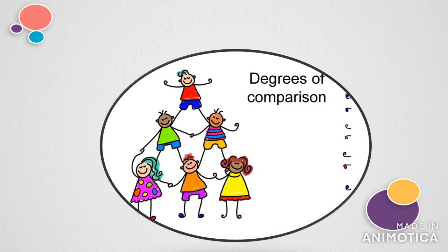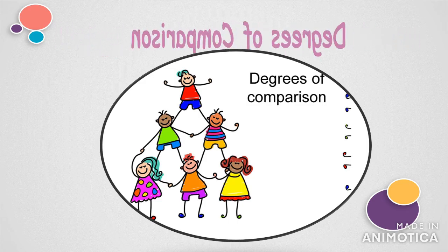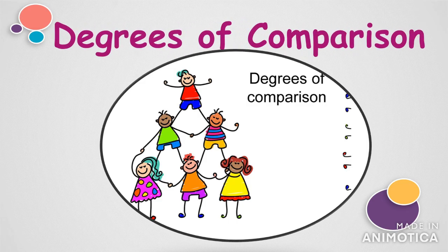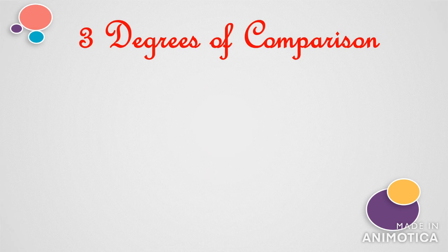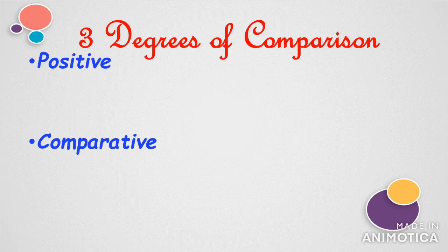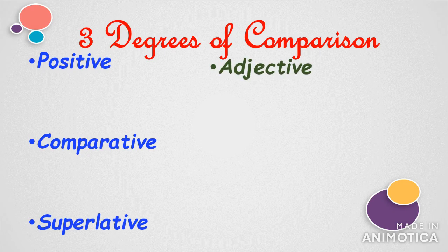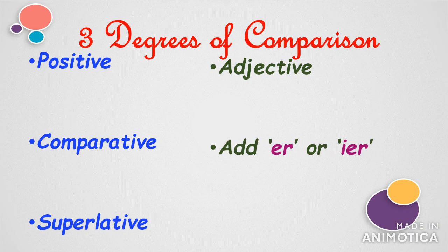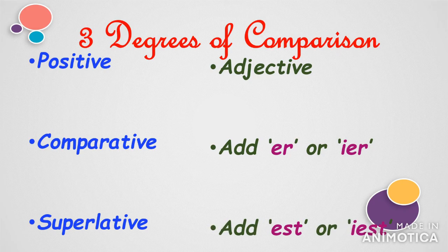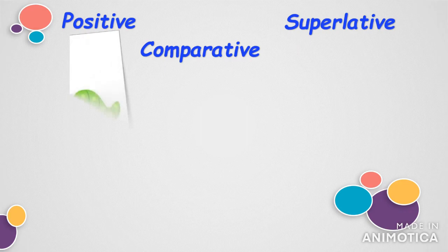Good morning children. In today's session we shall be looking at degrees of comparison. I had introduced this topic in an earlier video and today we shall be looking at it in detail. Basically, there are three degrees of comparison: positive, comparative, and superlative. The adjective in its base form is in positive degree. When we change that adjective into comparative form we add 'er' or 'ier', and when that same adjective is changed into superlative degree we add 'est' or 'iest'.